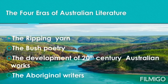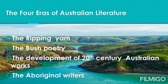There are four eras or branches of Australian literature which we are going to see one by one. The first is called The Ripping Yawn. The second is Bush Poetry. The third is The Development of 20th Century Australian Works. And the fourth is the Aboriginal Writers, who have developed more recently in order to tell and spread the Aboriginal stories.